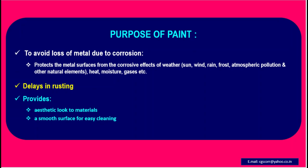Purpose of paint: It prevents loss of metal due to corrosion. It protects metal surfaces from the corrosive effects of weather, such as sun, wind, rain, frost, atmospheric pollution, and other natural elements, as well as heat, moisture, and gases. The paint delays rusting, provides an aesthetic look to materials, and a smooth surface for easy cleaning.